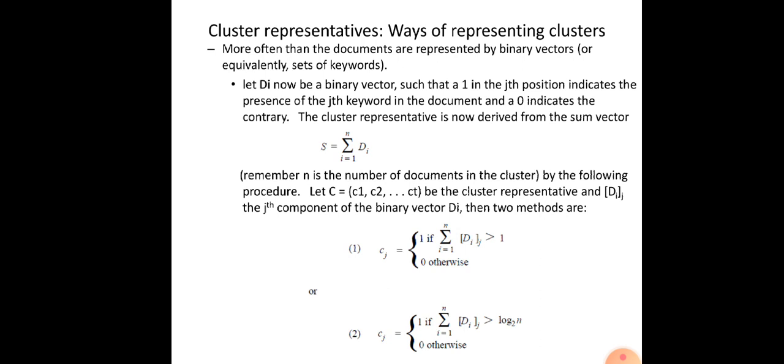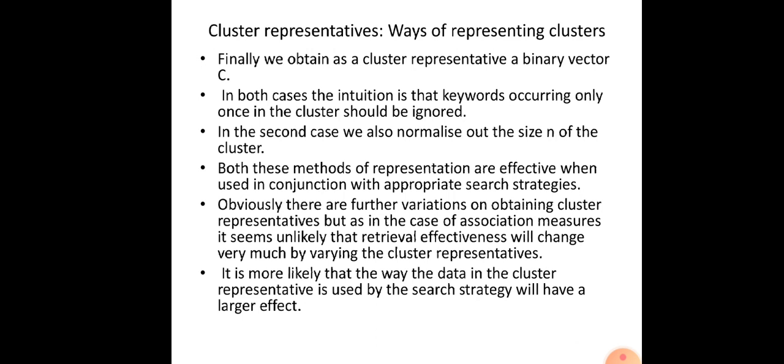In the second method for finding the cluster representative, we set cj = 1 if Σ(i=1 to n) dij is greater than log₂n, and 0 otherwise. Here we take the threshold as log₂n, which normalizes the cluster size n. Finally, we get a cluster representative as a binary vector containing 1s and 0s, where 1 means that keyword is present in at least more than two documents in the first method, and the second method uses threshold log₂n.